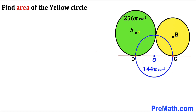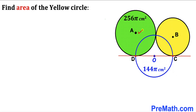Welcome to pre-math. In this video we have a green and yellow circle tangent to each other, whereas a blue circle intersects both of these circles, as you can see in the diagram. The area of the green circle is 256π cm² and the area of the blue circle is 144π cm². The center of the green circle is A, the center of the yellow circle is B, and the center of the blue circle is O. Our task is to calculate the area of the yellow circle.